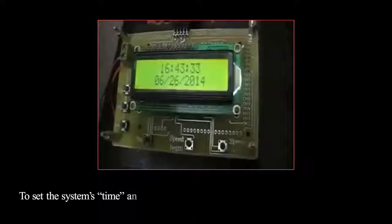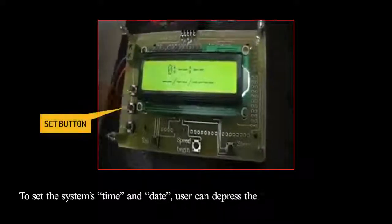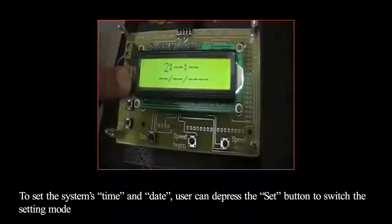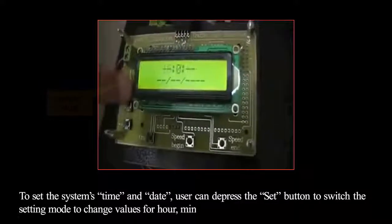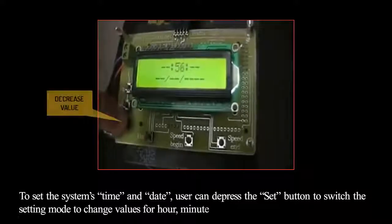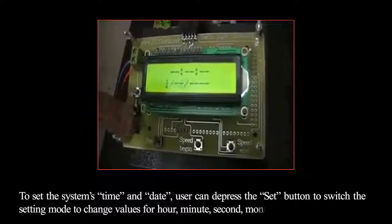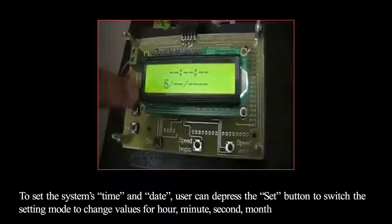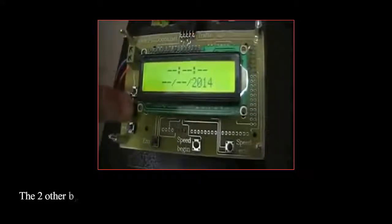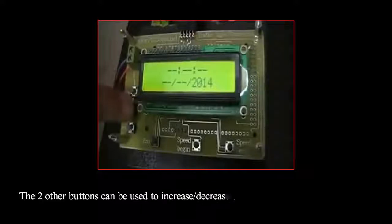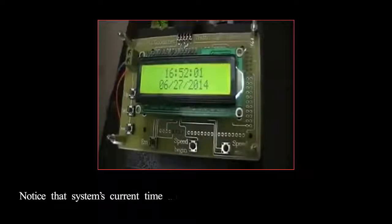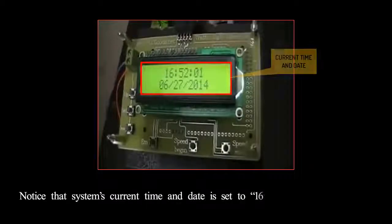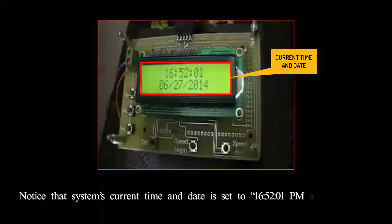To set the system's time and date, a user can depress the SET button to switch the setting mode to change values for hour, minute, second, month, and year. The two other buttons can be used to increase or decrease each related value. Notice that the system's current time and date is set to 16:52 and one second, and 6/27/2014 respectively.